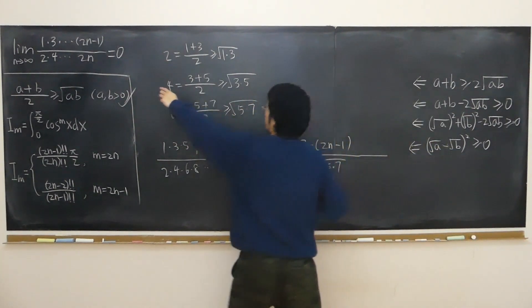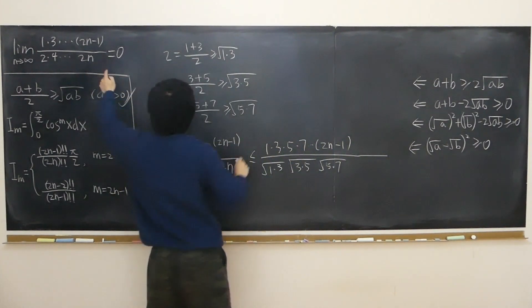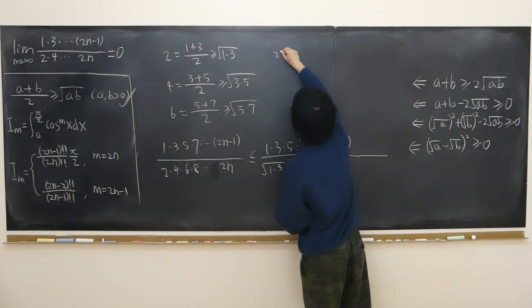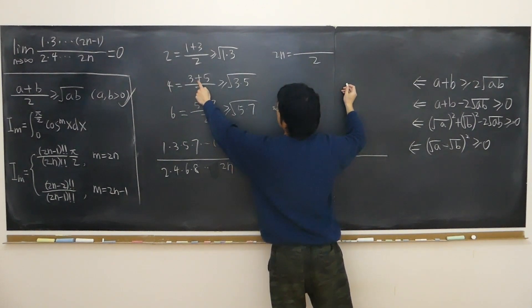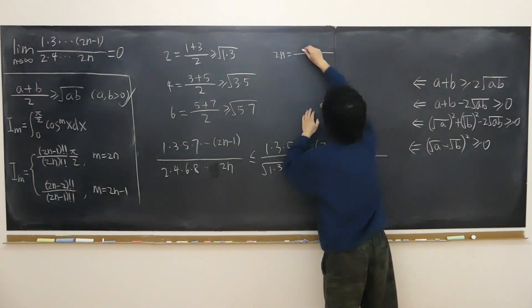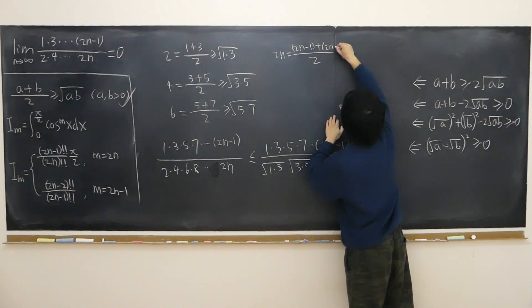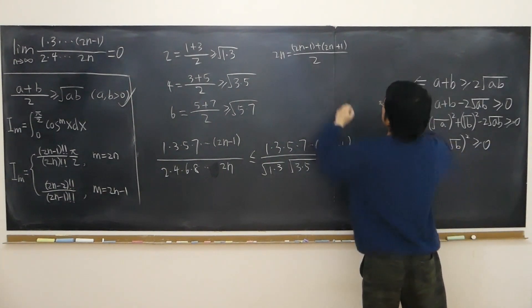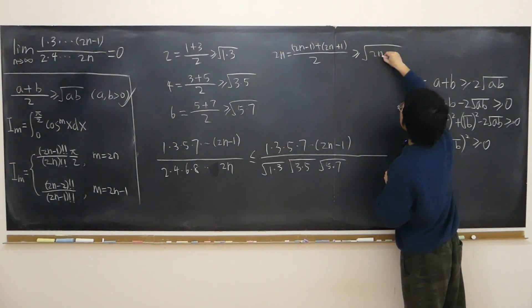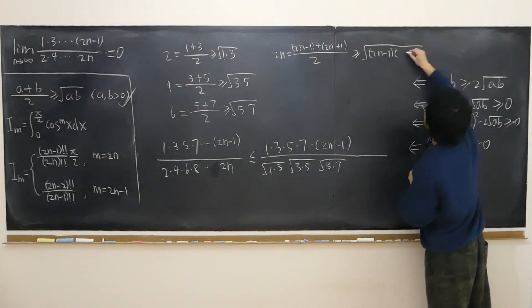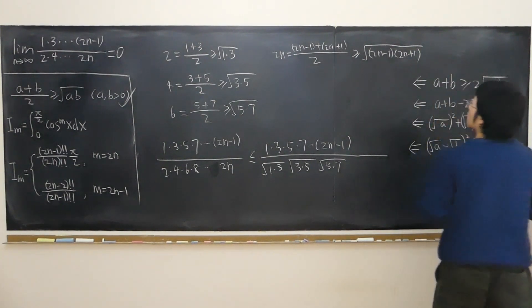So 2n can be written as, let me see, 2n can be half again. 3 is 1 unit less than 4, 5 is 1 unit larger than 4, so therefore (2n minus 1) plus (2n plus 1). So again this is larger than or equal to the square root of (2n minus 1) times (2n plus 1).